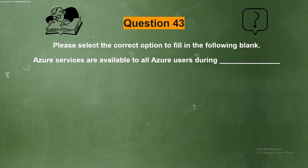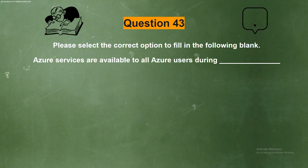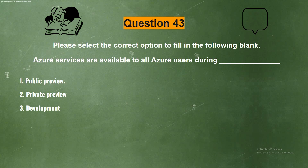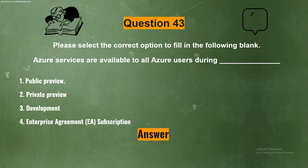Next question. Please select the correct option to fill in the following blank. Azure services are available to all Azure users during ___. The options are: Option 1: Public preview. Option 2: Private preview. Option 3: Development. Option 4: Enterprise agreement subscription. And the correct answer is Option 1: Public preview.